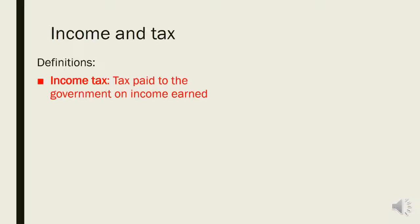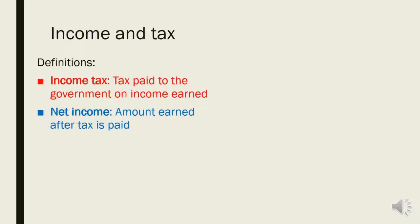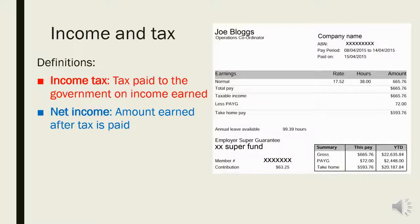Income tax is tax paid to the government on any income that's earned. Net income is the amount of money you take home — the amount you actually earn after you've paid your tax. Let's have a look at a sample pay slip.